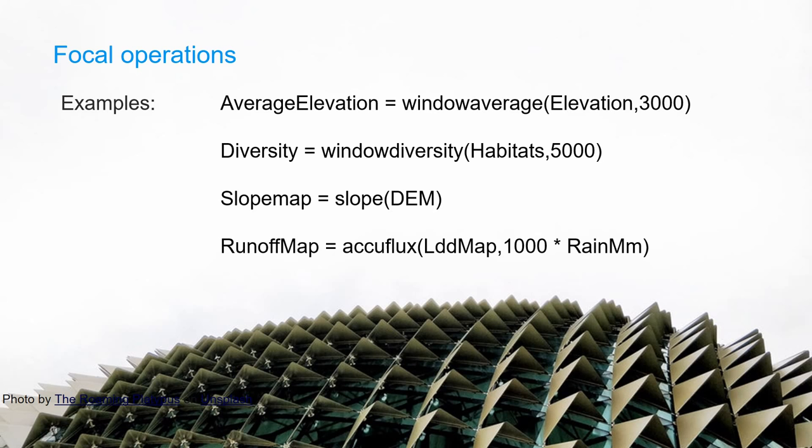An example of using the flow path is where we have rain as input, apply a unit conversion by multiplying by 1,000, and use a flow direction map — or local drain direction map — with the function AccuFlux, which accumulates the material (1,000 times rain in millimeters) over the flow direction to get the flow accumulation.